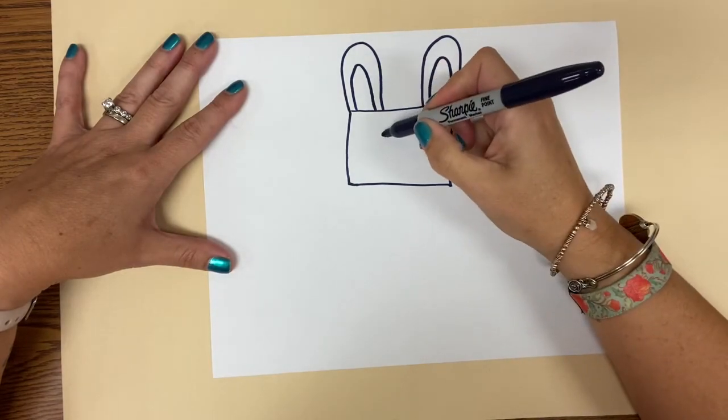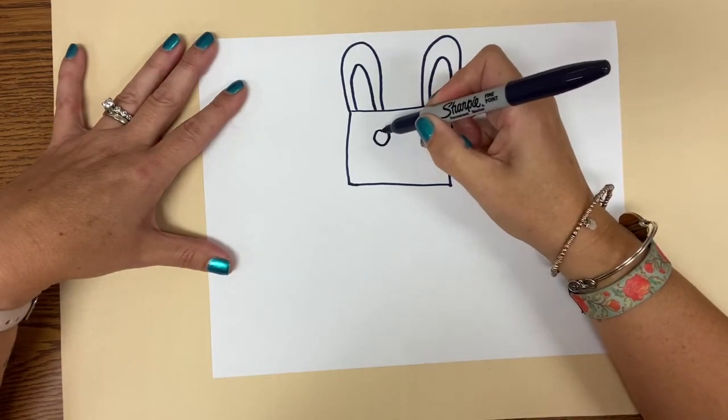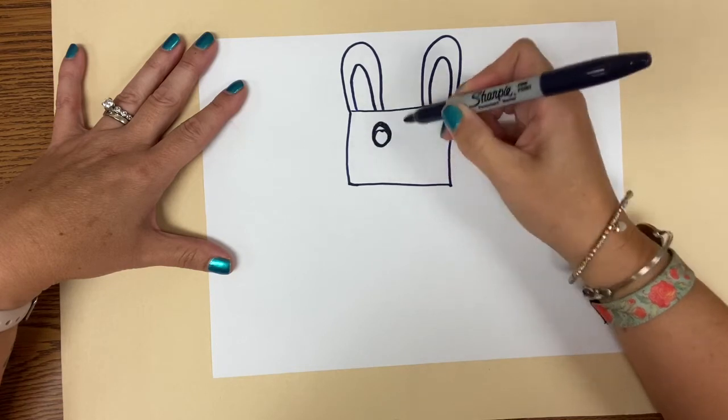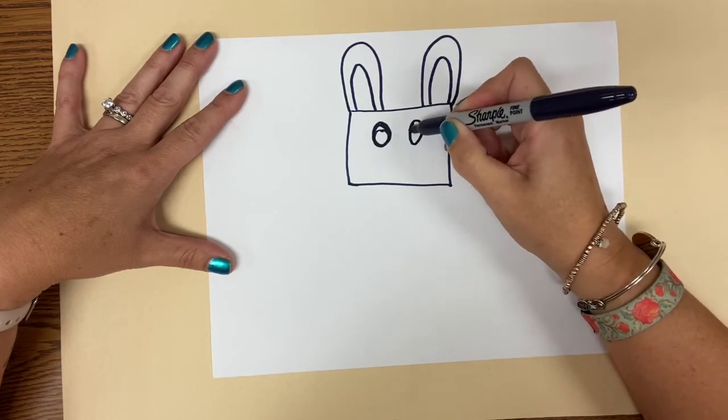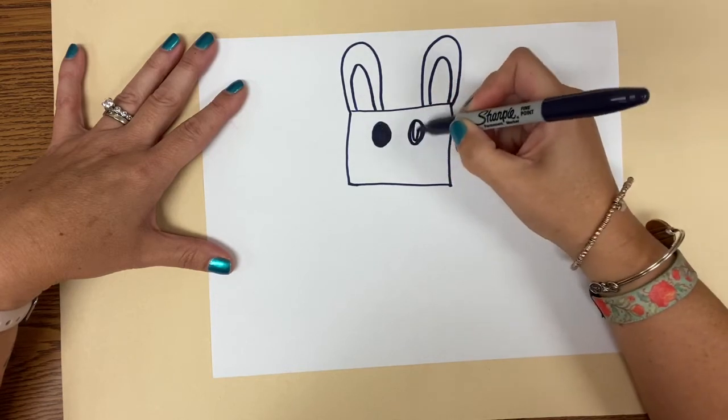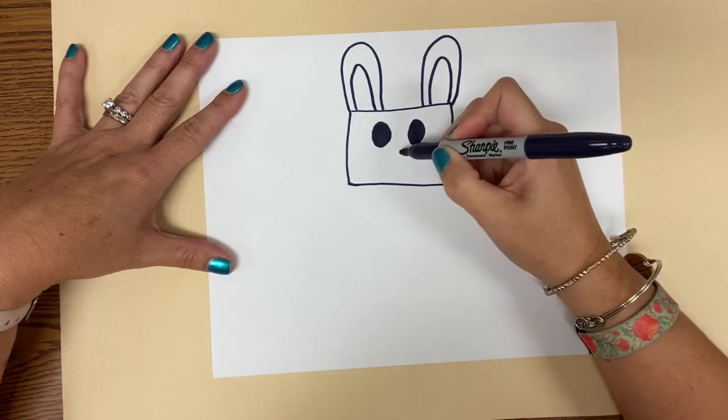Now we're going to draw his eyes. Whoops, see I made a mistake. That's okay. I'm just going to fix it. His eyes are ovals and later you can color those in. Since I made a mistake with my Sharpie and I can't erase, I'll just go ahead and color them in now.